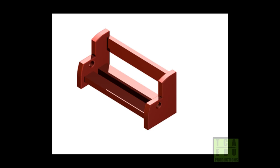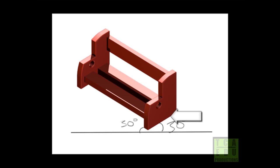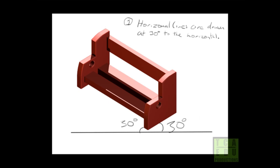The rules that we follow for isometric are actually fairly simple. First of all, the lines that would usually be horizontal are no longer horizontal — they are in fact taken back at 30 degrees. Although this is the case, isometric does not require foreshortening. That means we don't have to change any of the sizes of these horizontal lines. This size here is the true length, just as this length going back here. But it still looks visually correct. That gives us our first two rules: horizontal lines are drawn at 30 degrees to the horizontal, and all horizontal and vertical lines are drawn at the correct size.